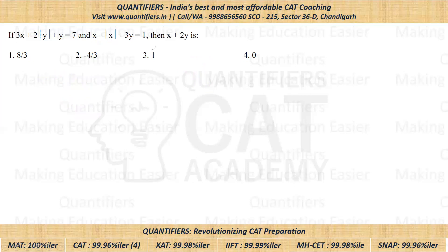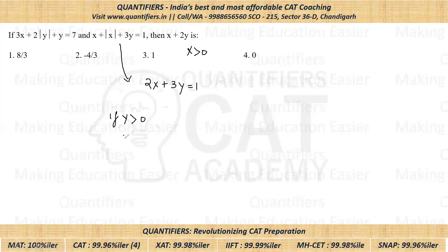So that means X has to be positive. Now if X is positive, this particular equation would become two times X plus three times Y is equal to one. Now let's assume that Y is positive. So now this first equation would become three times X plus three times Y is equal to seven.